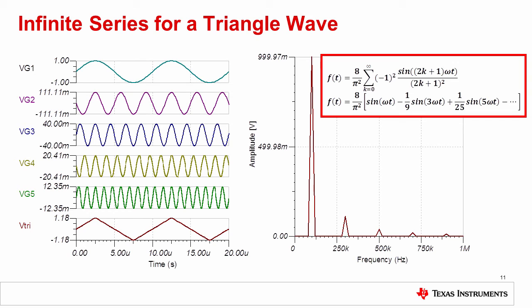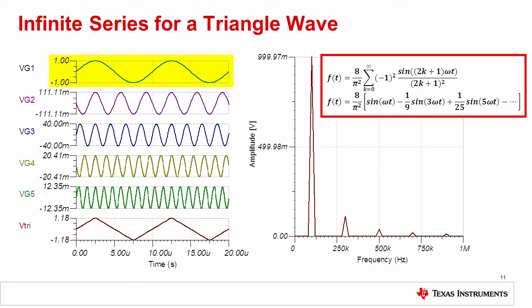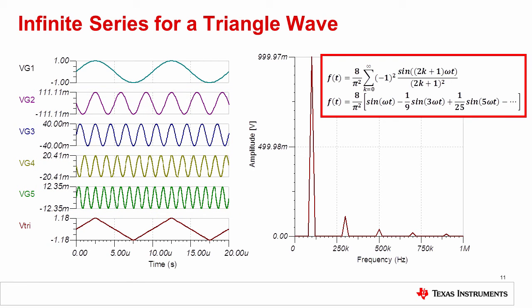Before digging into the details, let's review the concept of a Fourier series. Any non-sinusoidal periodic waveform can be created with an infinite series of sinusoidal waveforms of different amplitude and frequency. So for example, a triangle wave or square wave can be created by adding an infinite series of sinusoidal waveforms together. The example above shows how a triangle wave can be created by adding five different sinusoidal waveforms. The lowest frequency component is called the fundamental. The higher frequency components, called harmonics, are odd multiples of the fundamental frequency and also have smaller amplitudes. The mathematical Fourier series for a triangle waveform is shown here, as well as the magnitude of the frequency spectrum. The theory behind a Fourier series will be helpful in understanding how the shape of non-sinusoidal waveforms is affected by different types of filters.